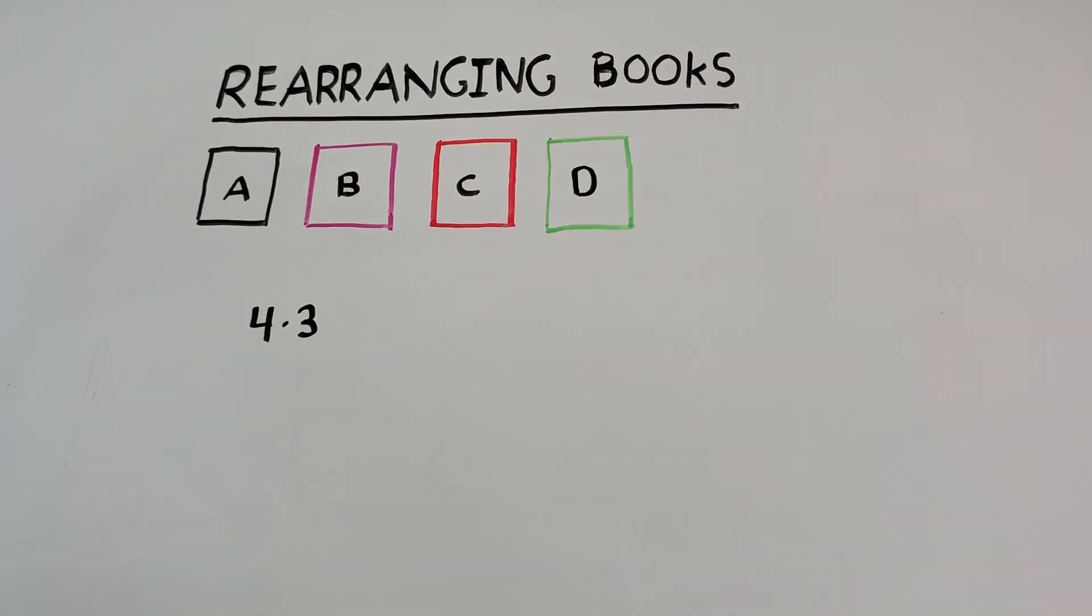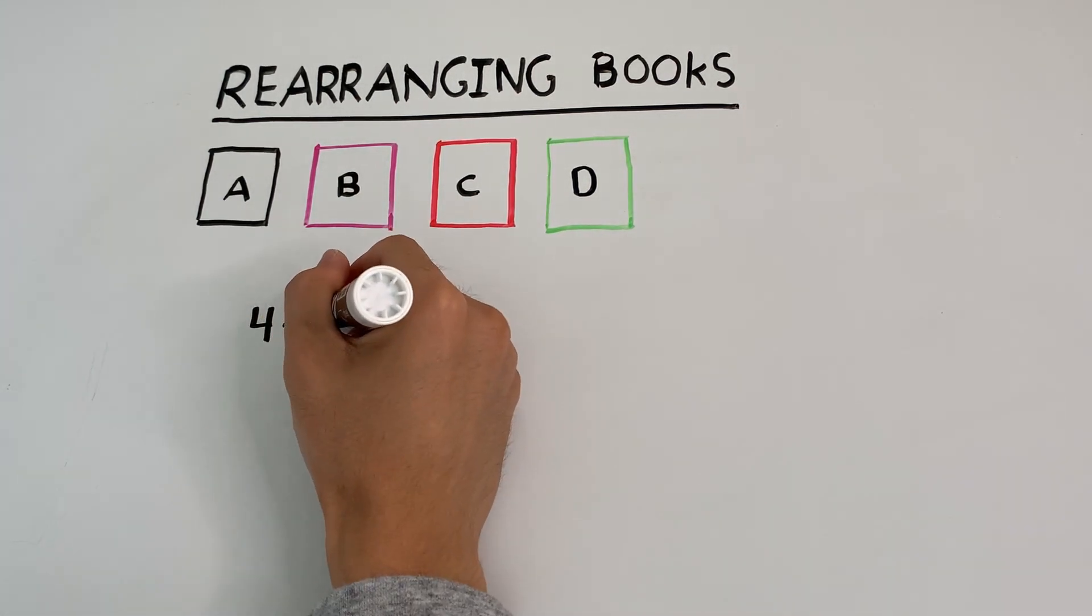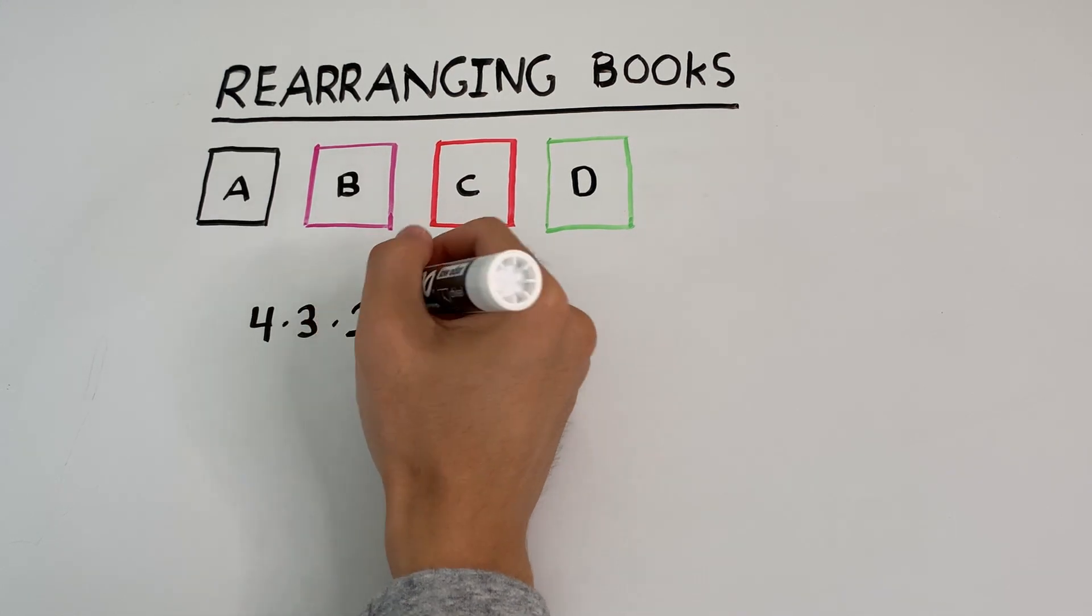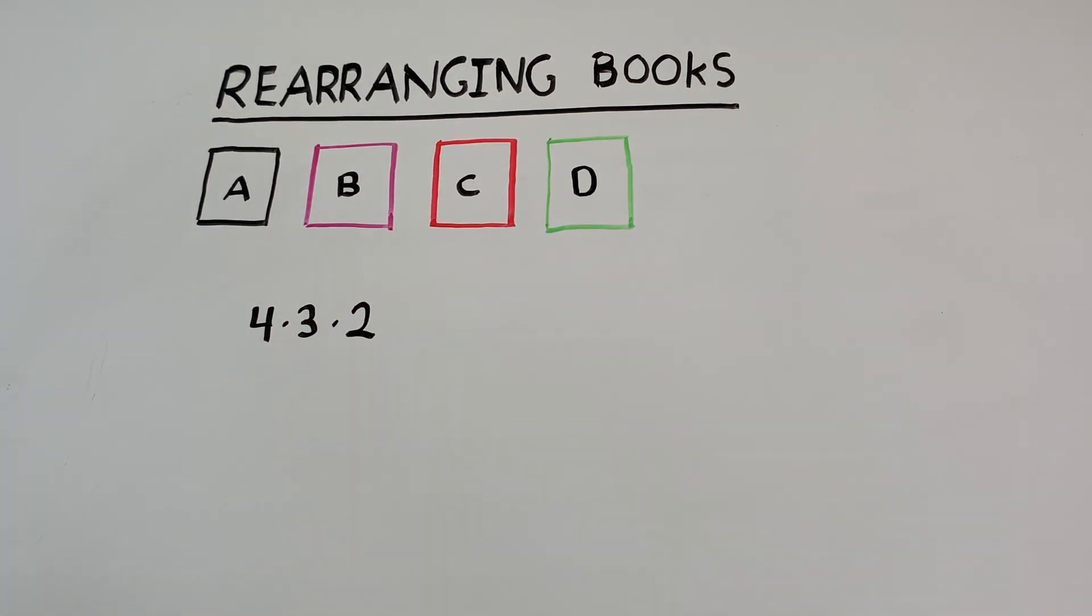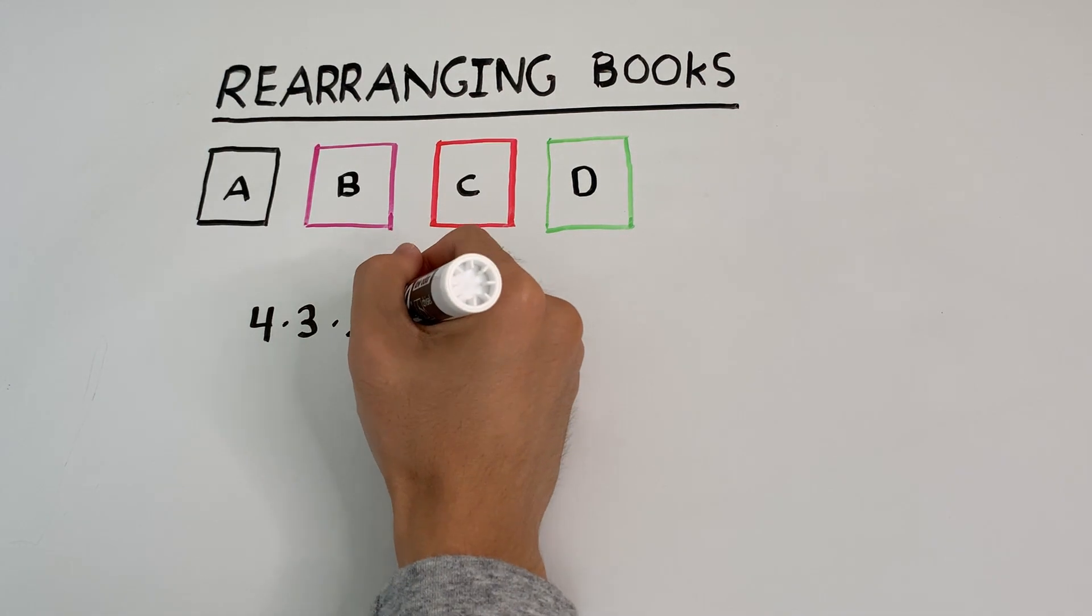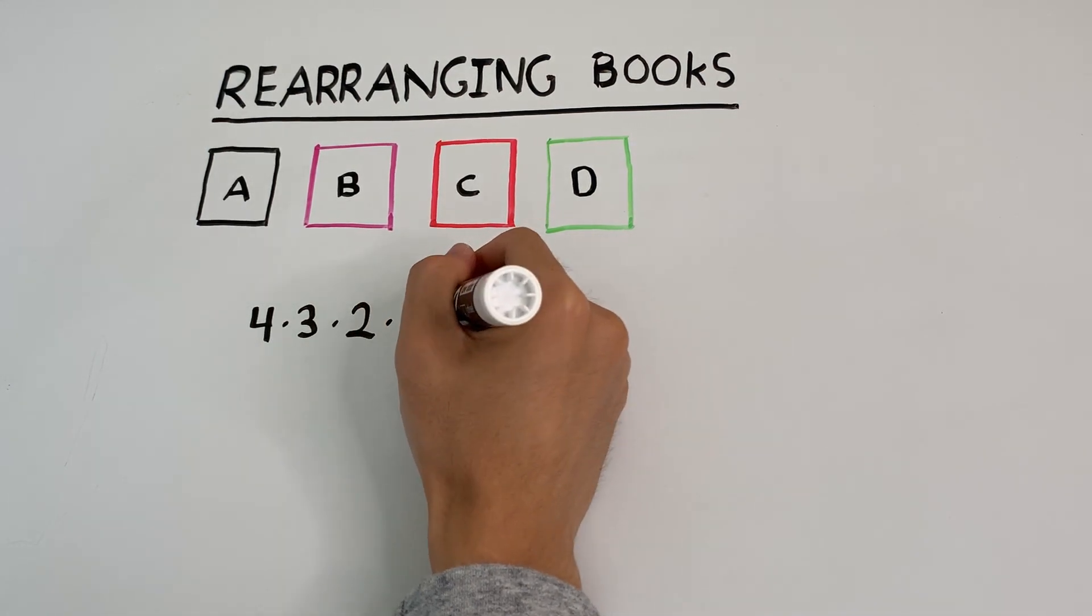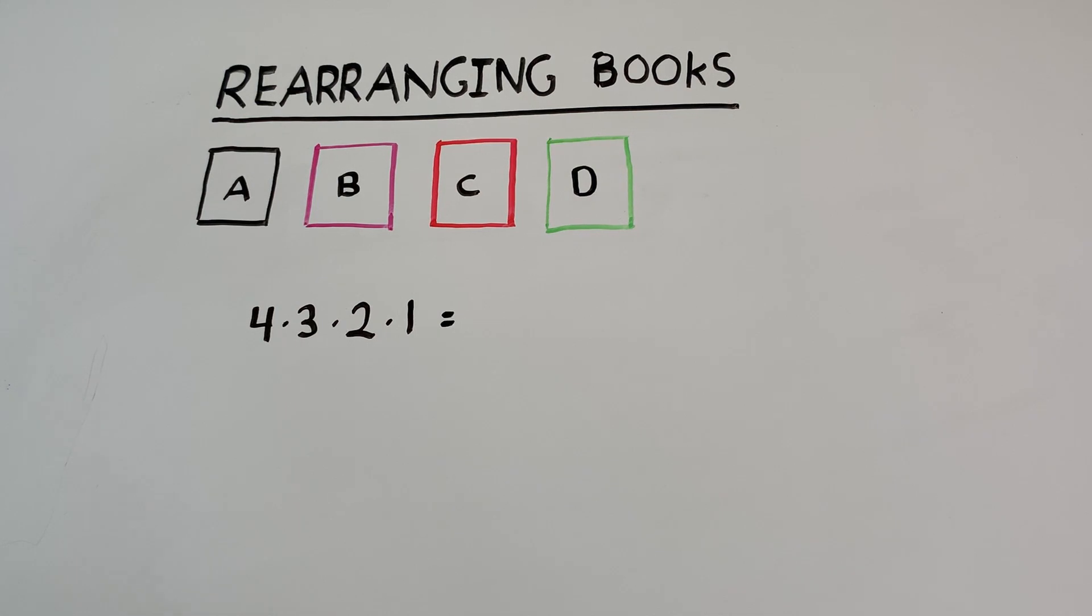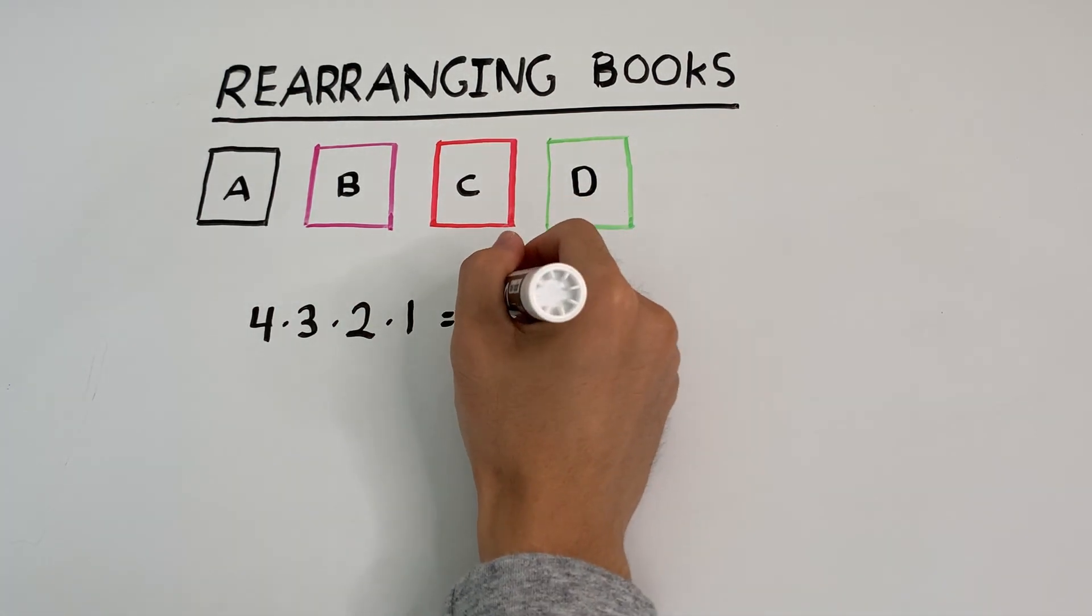After that book is placed, there are two choices for the next. And finally, there's only one choice for that last book. So the answer is four times three times two times one, which is 24.